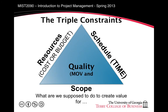Here we see something known as the triple constraints. The triple constraints are present in every project. In this model, each side constrains the other and is in turn constrained by the other two. Scope is drawn at the base since it is the foundation of what we do for our client. Executing the tasks that are part of the project's scope is how we create measurable organizational value.